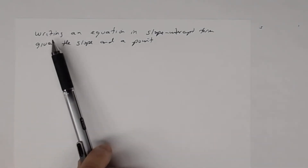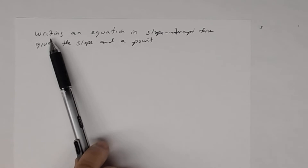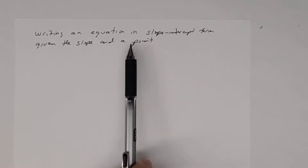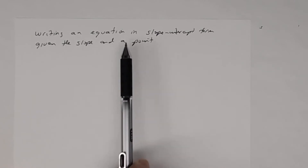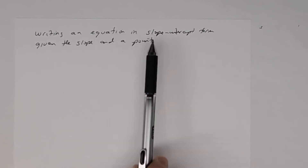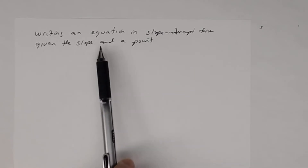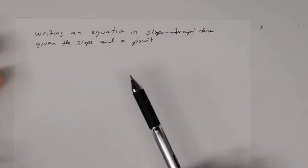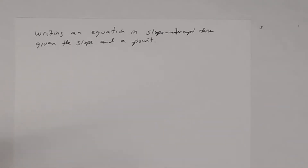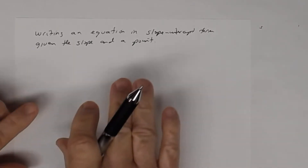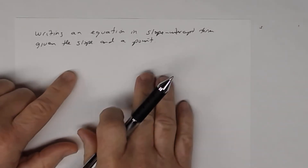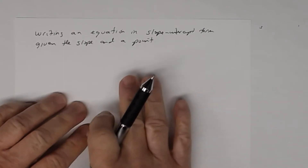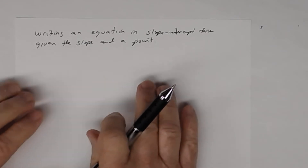In this lesson, we're going to look at the topic of writing an equation in slope-intercept form given the slope and a point. When we work these problems, we're going to do it two ways, and it's very important that you understand both ways. Don't just focus on learning one way versus the other — you need to know both.